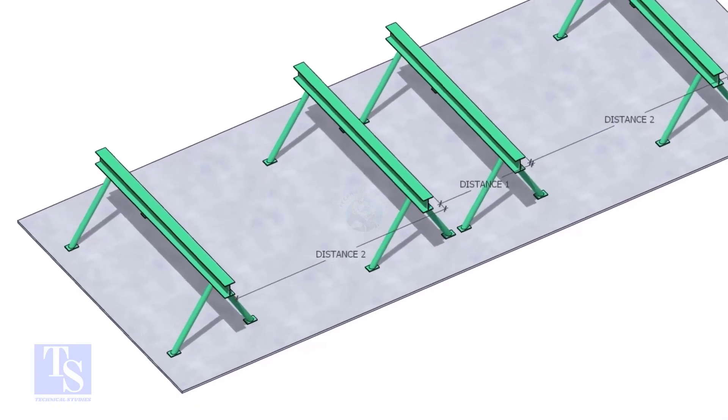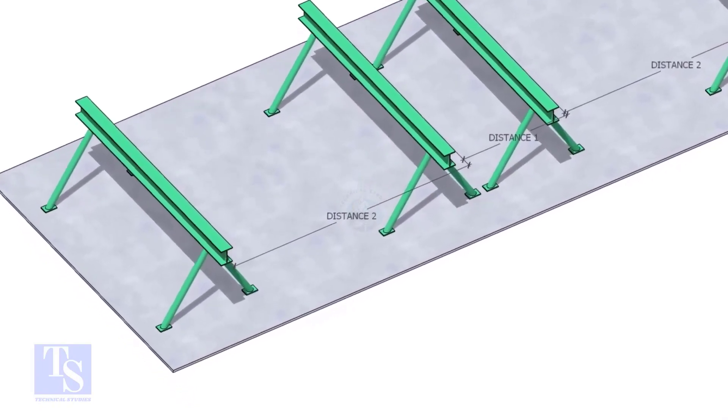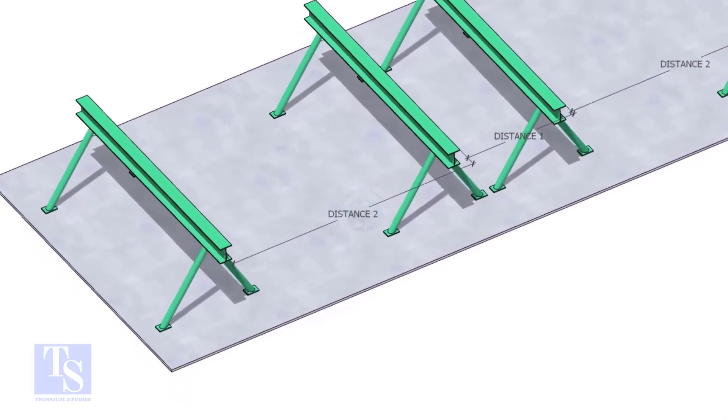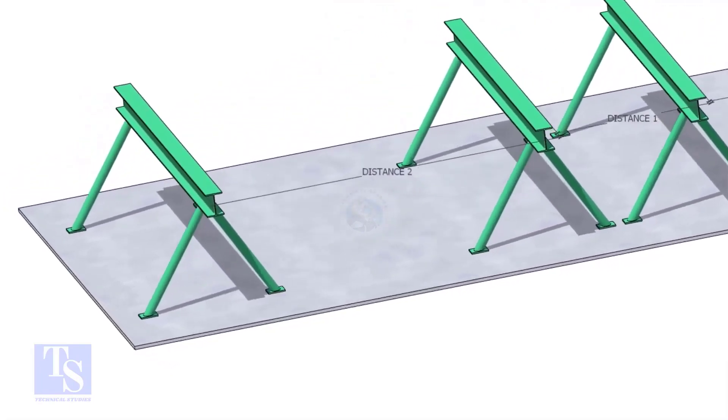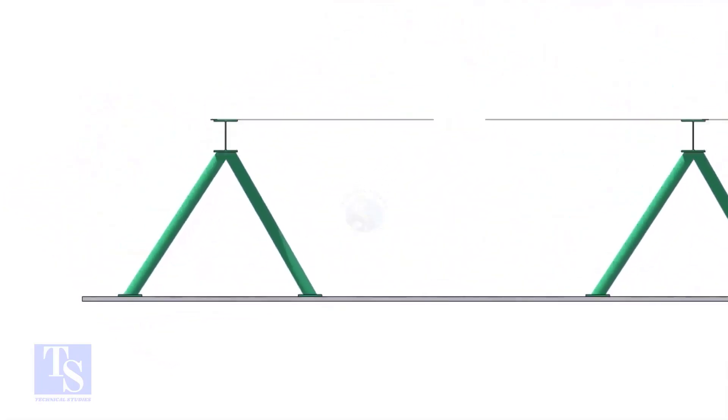Distance 1 shall be 1 meter to 1.2 meters, and distance 2 shall be 2 to 2.5 meters, less than the random pipe.